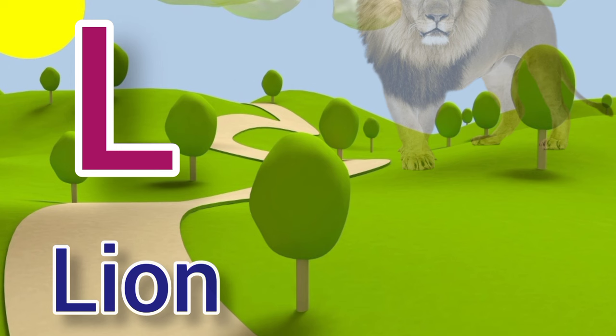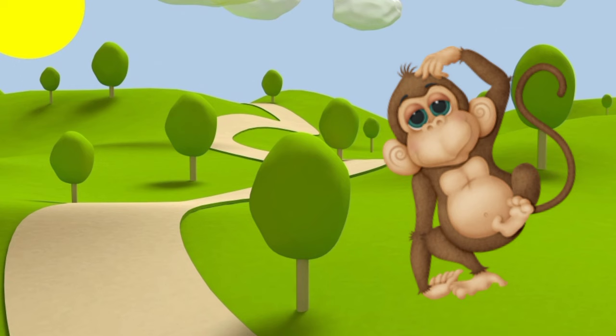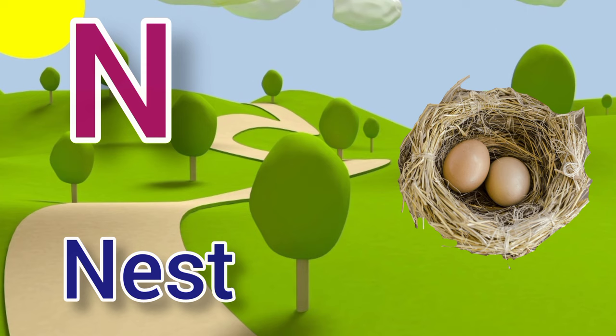L for lion, lion means share. M for monkey, monkey means bandar. N for nest, nest means ghosla.